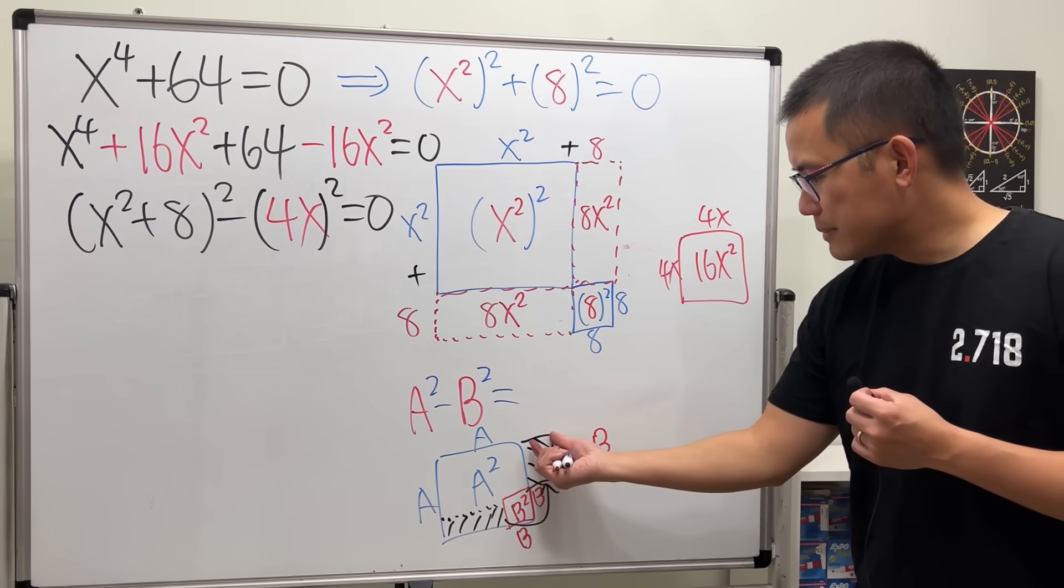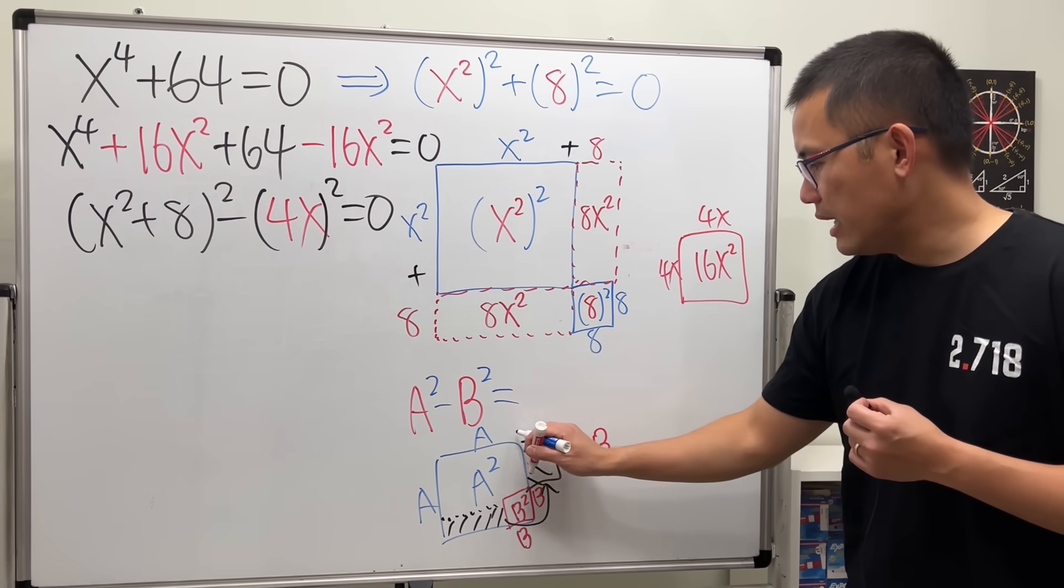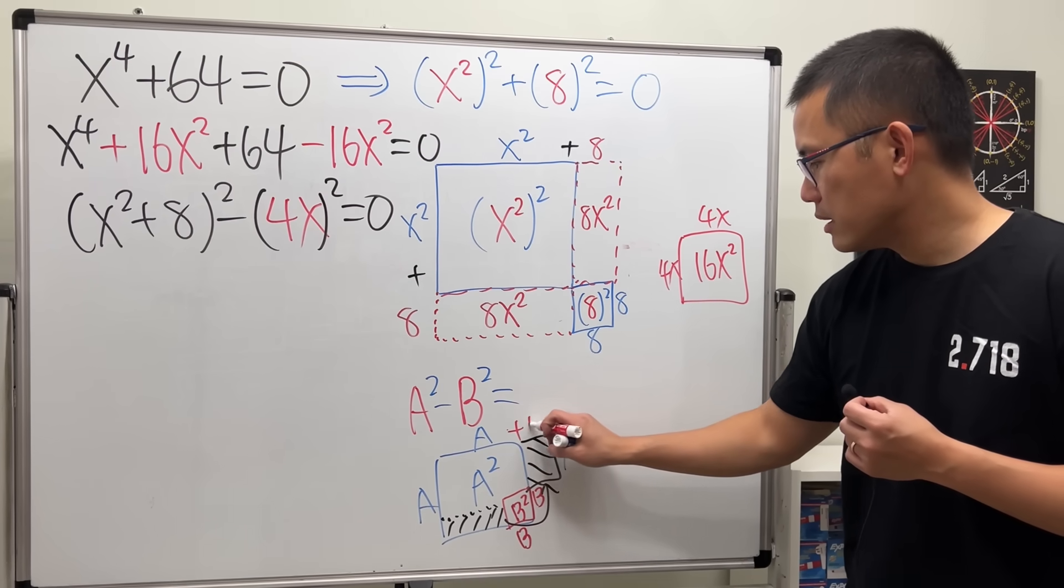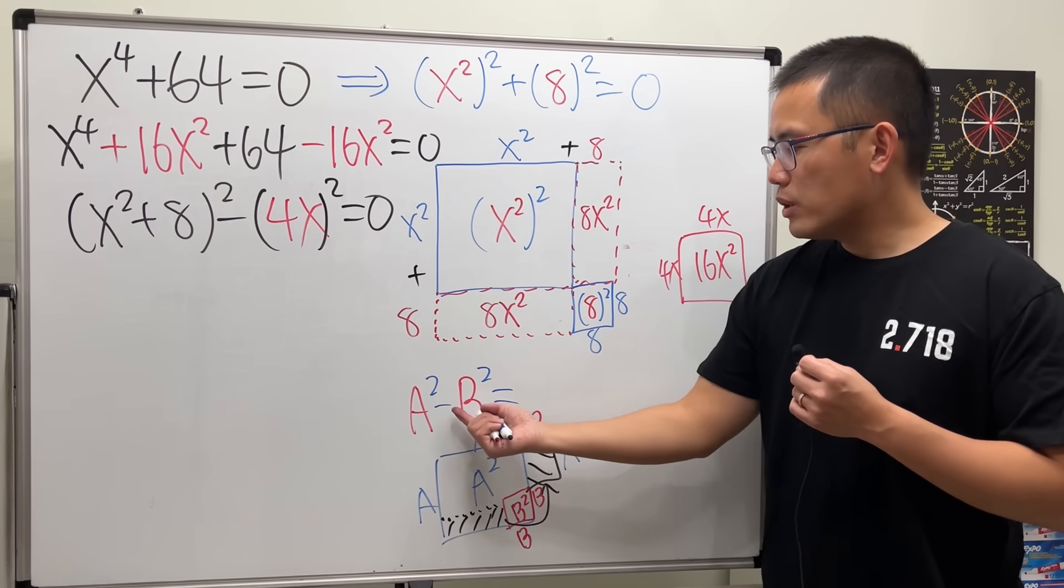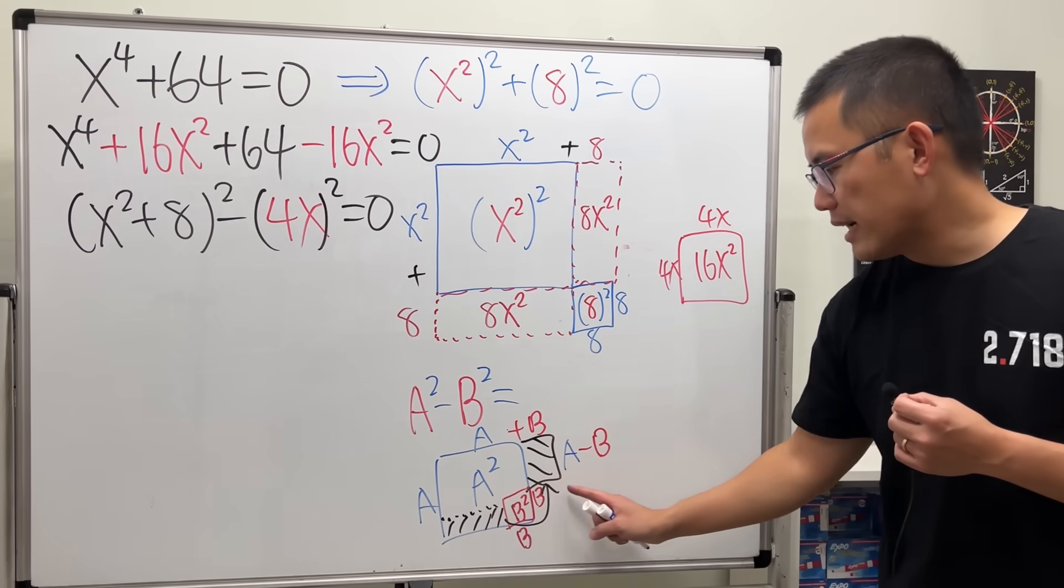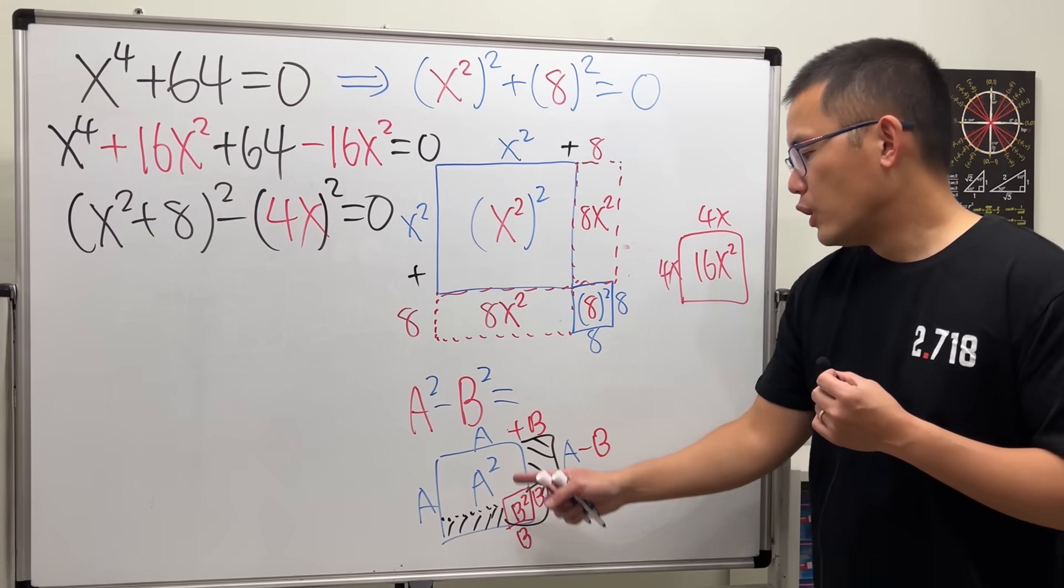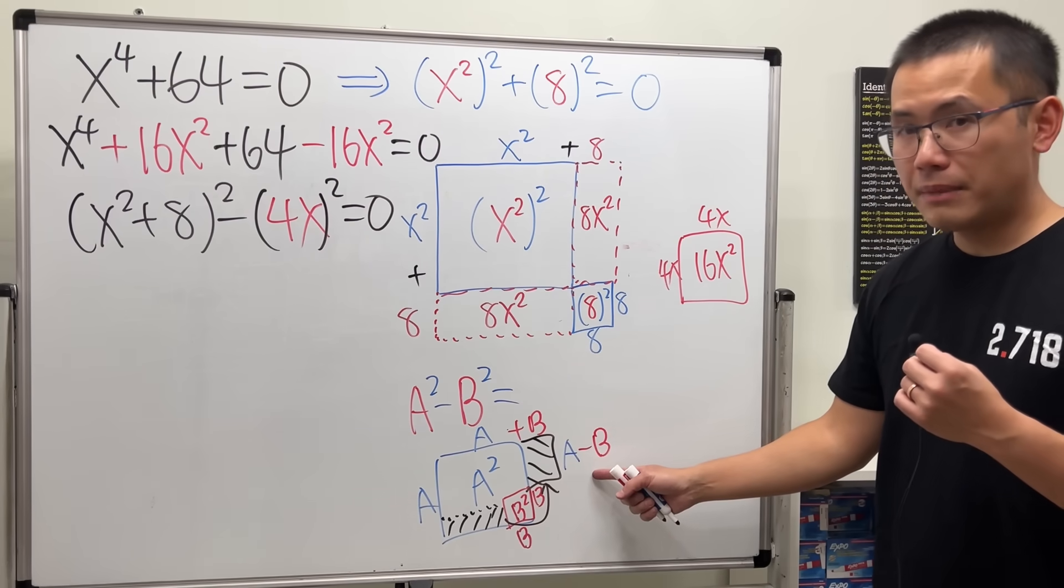And then, now we're adding this part. That's b. So, that's a plus b. So, a squared minus b squared, we can look at it as a nice rectangle with a plus b times a minus b.